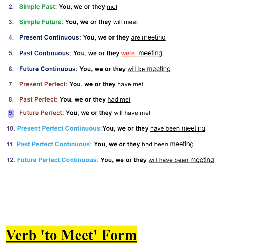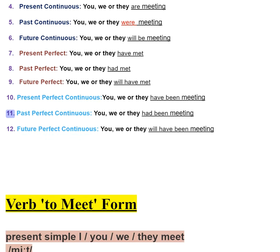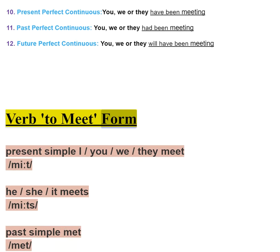9. Future perfect — you, we, or they will have met. 10. Present perfect continuous — you, we, or they have been meeting. 11. Past perfect continuous — you, we, or they had been meeting. 12. Future perfect continuous — you, we, or they will have been meeting.